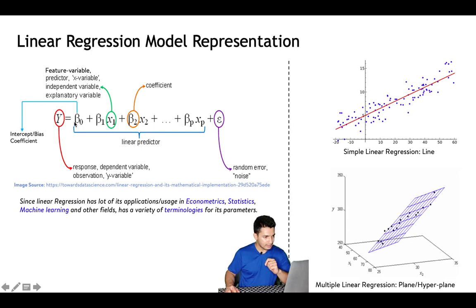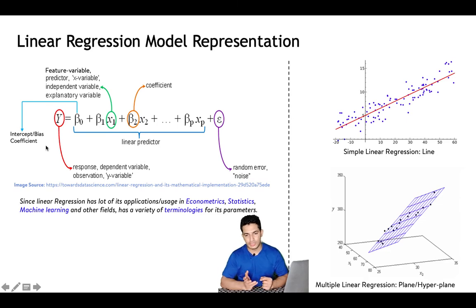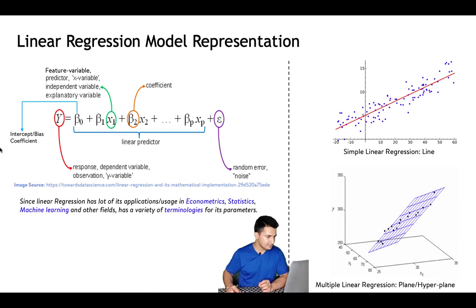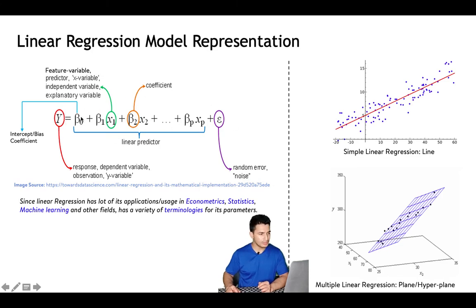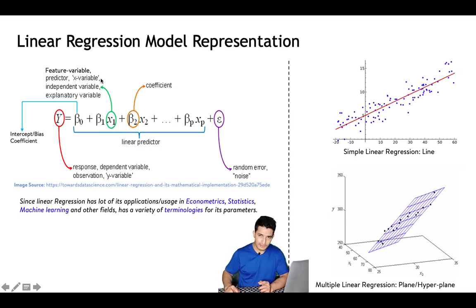y is also called the observation or y variable. On the right-hand side, β₀ is the intercept or bias. From the equation of a line y = mx + c, β₀ is that intercept c. In a problem statement, β₀ can be thought of as the impact on y when all features are zero — the bare minimum value. On the plot, when x is 0, y equals 5, which represents β₀.